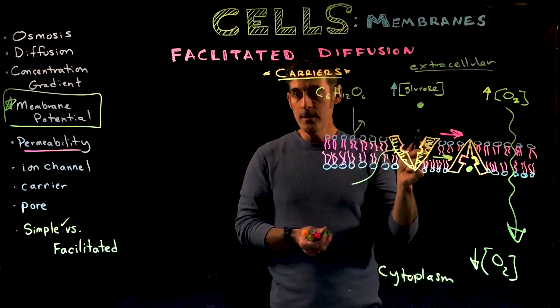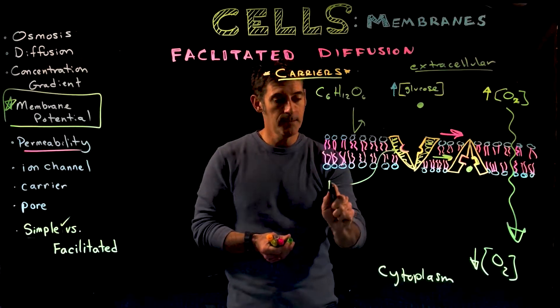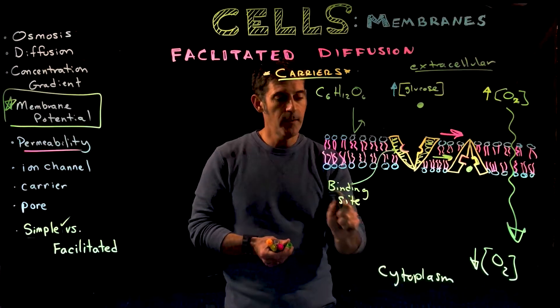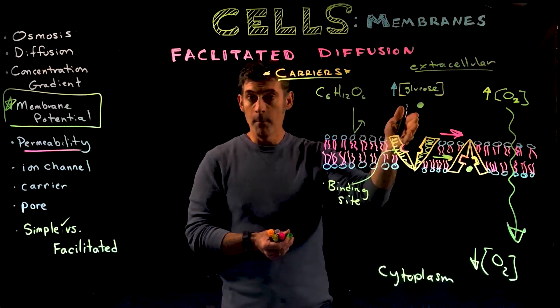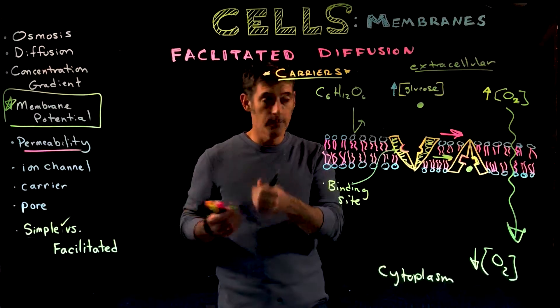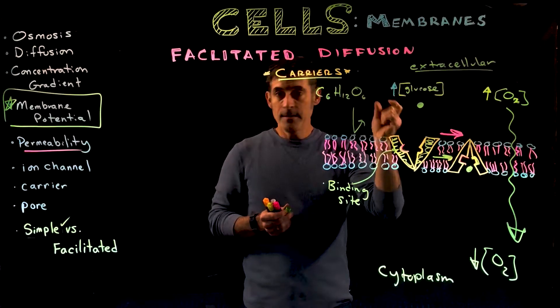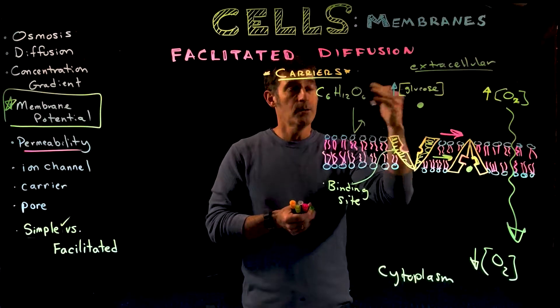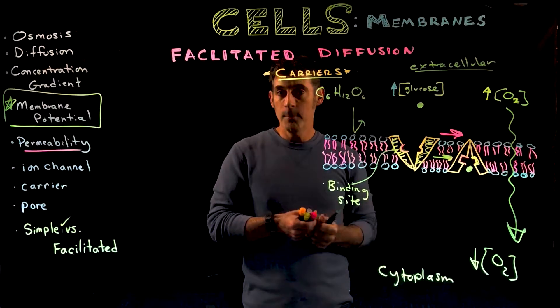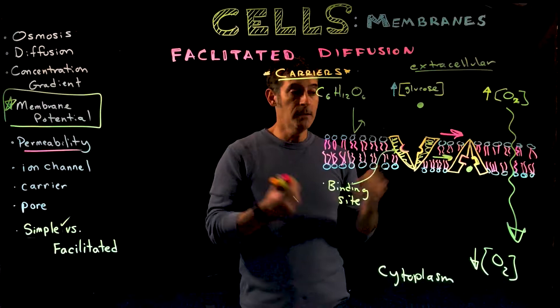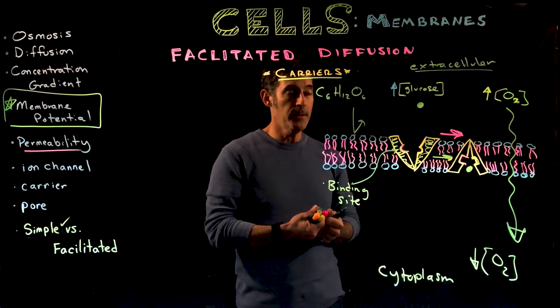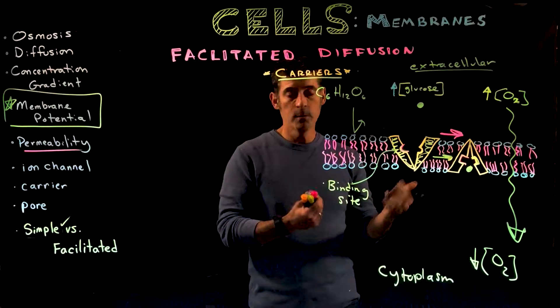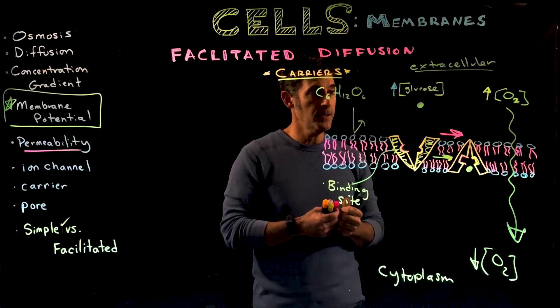Carriers have a binding site that's very particular. It's specific for the molecule it binds to, like a receptor. It has a certain size, shape, charge, and polarity that's complementary to the molecule it transports across the membrane. In this case, glucose. Fructose wouldn't work. Another sugar wouldn't work. Only glucose.